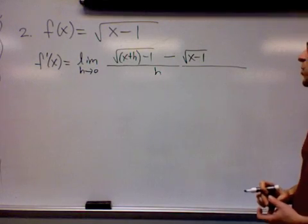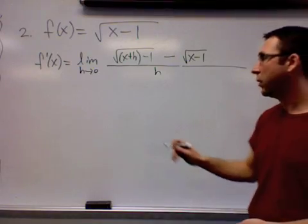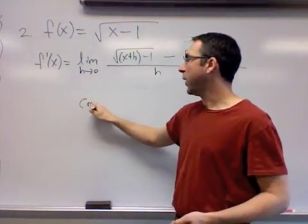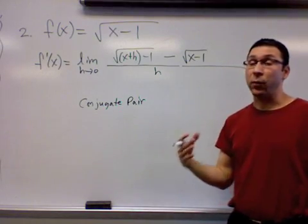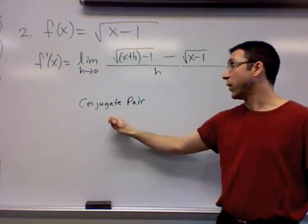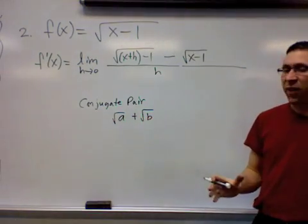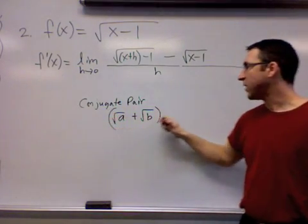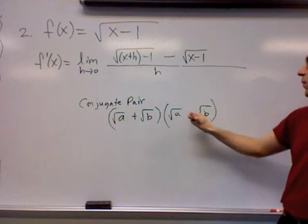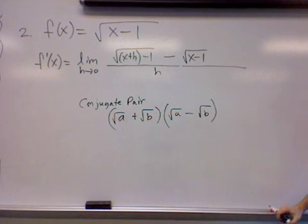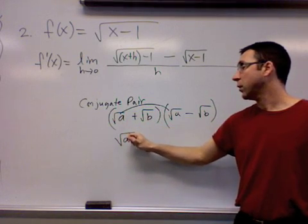We've got to figure out how to get rid of these radicals. One trick we can use to get rid of radicals — you've used it before — is by multiplying by a conjugate pair. A conjugate pair is a binomial that can get rid of radicals that appear in another binomial. For a very simple example, if we have the square root of a plus the square root of b, and we wanted to find a mathematical way to lift off those radicals, we could utilize the conjugate pair idea. A conjugate pair is the same expression, except with a different sign. When you multiply those two binomials together, say goodbye to the radicals — because radical a times radical a is radical a squared, which is just a.